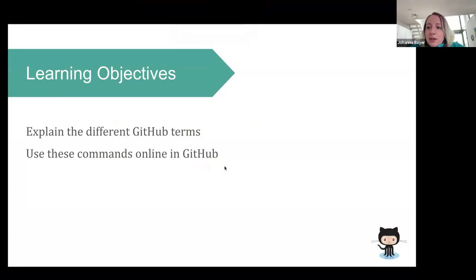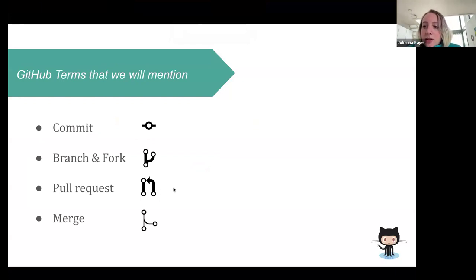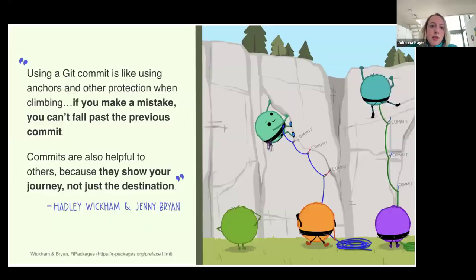In the second part of this workshop we're going to go over some additional terms you usually encounter when using Git, and also use the commands online in GitHub. The terms we are going to talk about are committing, branching, and forking, what a pull request is, and then merging. These terms are quite standard so you might have heard them already in relation to version control.